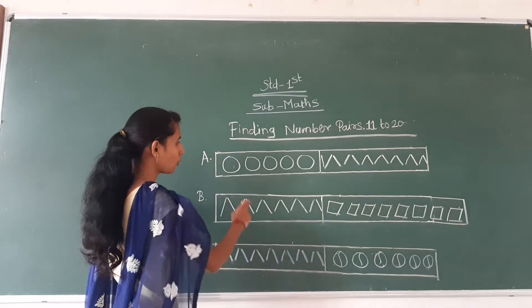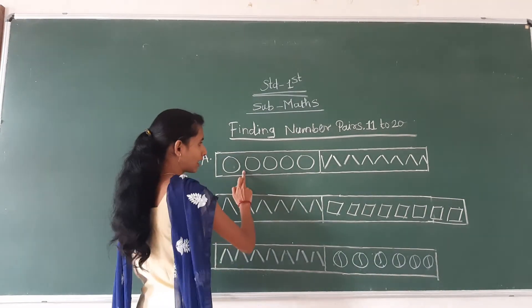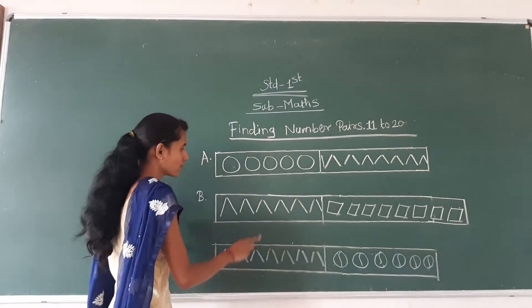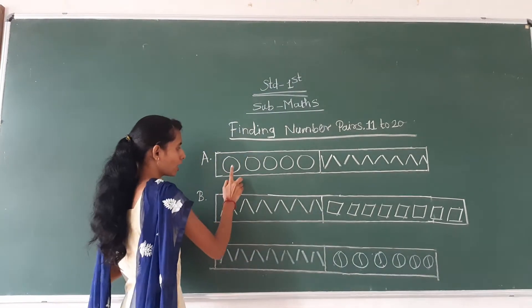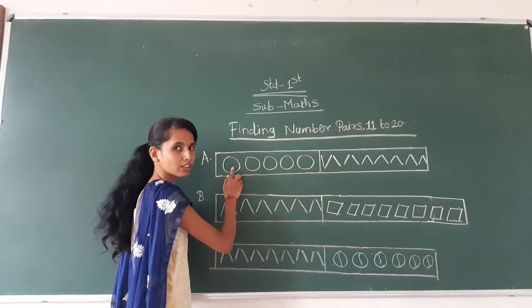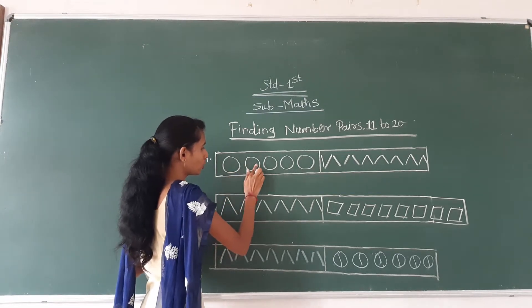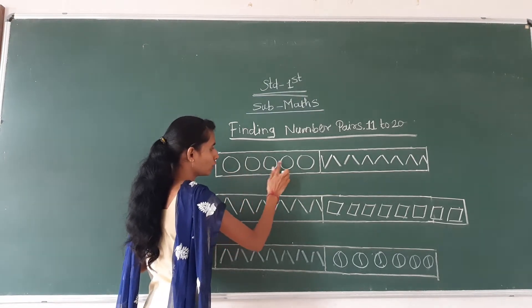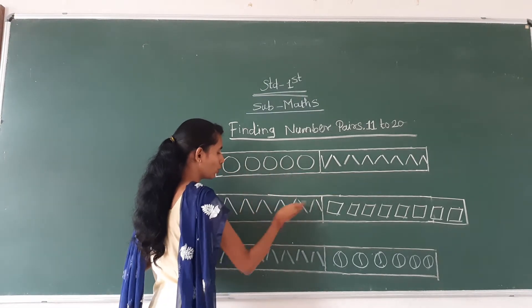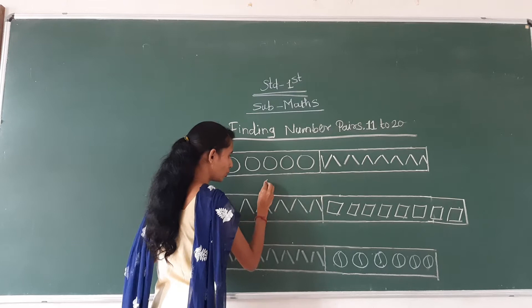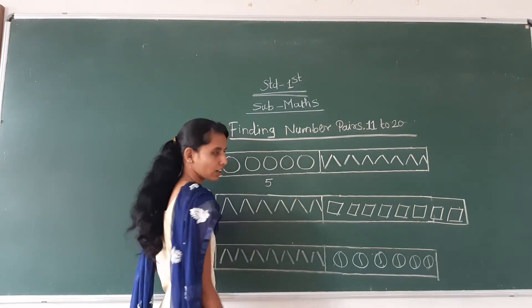So we count the circles and lines. See, attention here — how many circles here? 1, 2, 3, 4, 5. Five circles here.